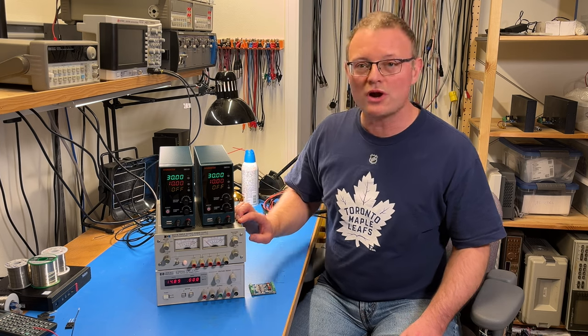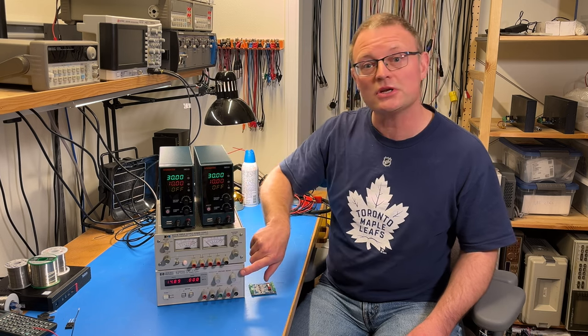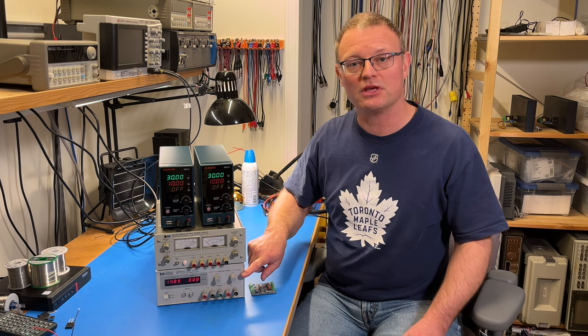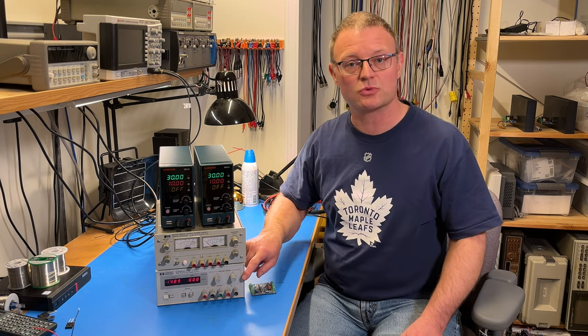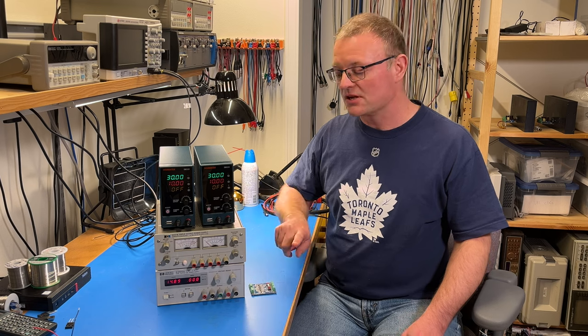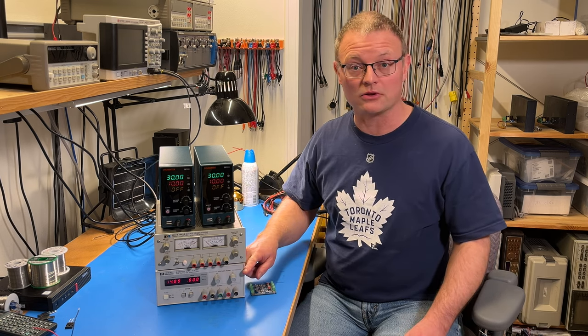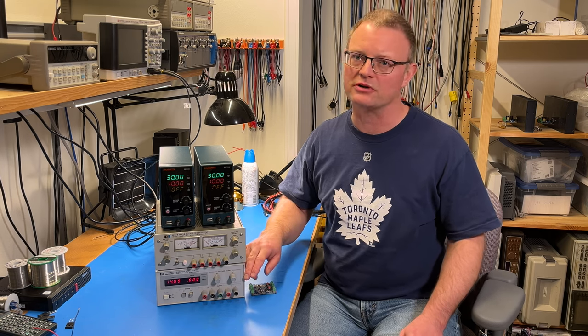If you would rather not have these moving coil meters, but you prefer the digital readout, the modern equivalent is the HP or Agilent or Keysight E3620A. And that is available new for about $1,200 or on the used market for around the $200 and $250 mark.